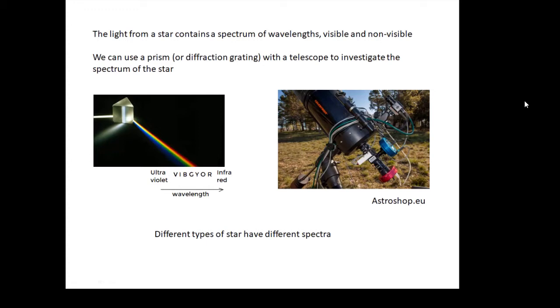You'll remember from GCSE, if you put white light through a prism then you get ROYGBIV, the different colors of the visible spectrum. Now what we can do is we can get the light from a star and we can put it through a prism on the end of our telescope and we can have a detector.